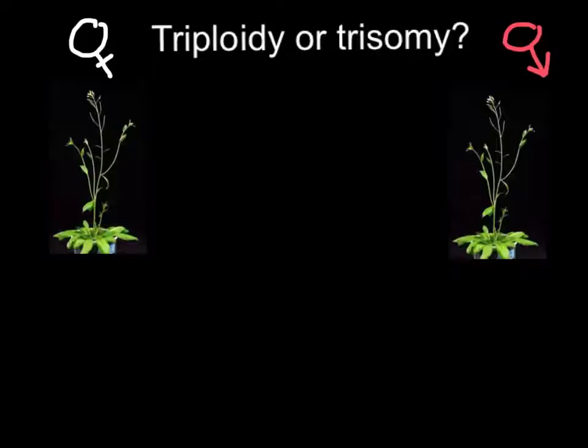So the haploid number of this plant is five chromosomes. On the father's side it can be found in the pollen grain, and on the mother's side five chromosomes haploid number can be found in the egg cell.